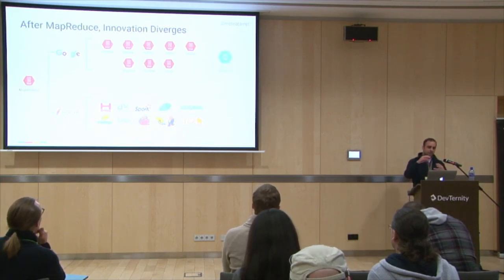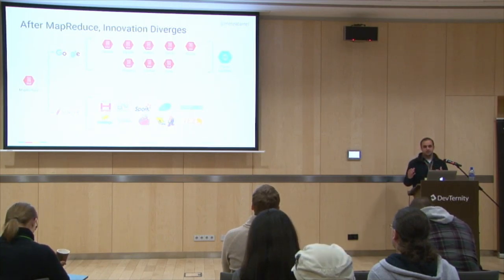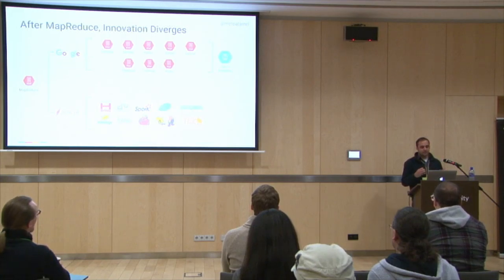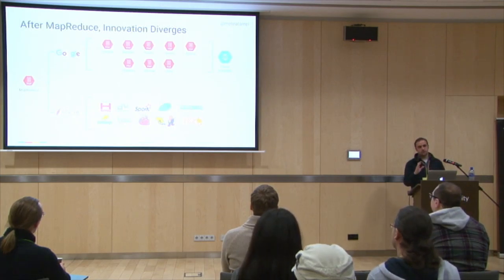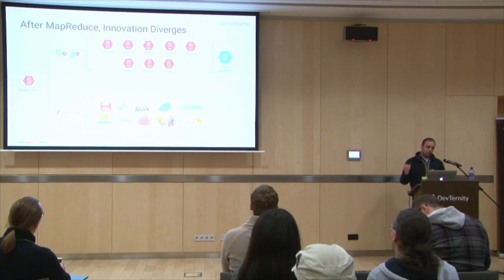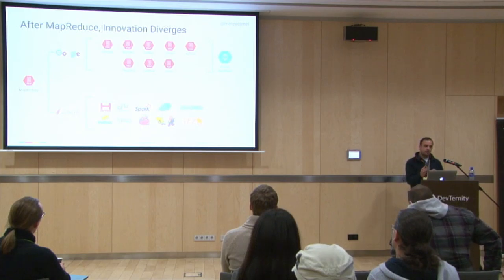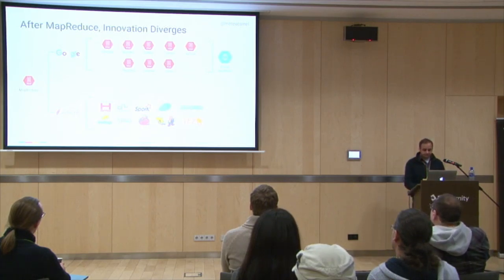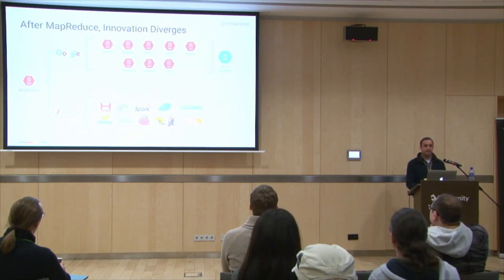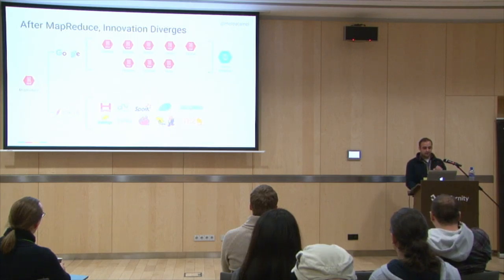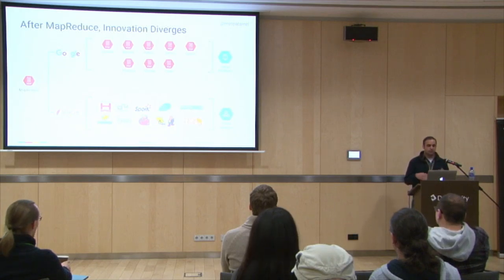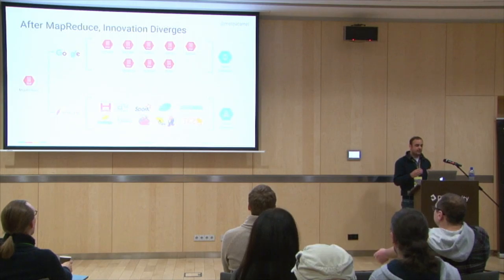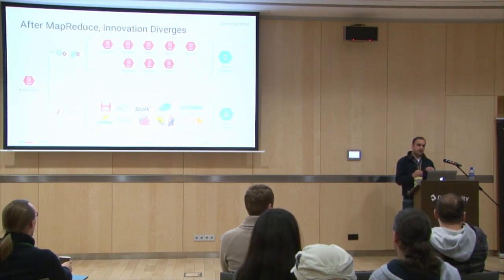So we have two splits: the innovation at Google, and the innovation happening in open source at Apache. To cater for these two separate groups, we have two separate products in Google Cloud. One is called Cloud Dataflow — everything that happened at Google basically ended up with Cloud Dataflow, and you can use it in Google Cloud. But if you're already using Hadoop, Spark, and Hive, you can also run those jobs on Google Cloud using Cloud Dataproc, which is a managed service for Spark, Hive, and Hadoop jobs.